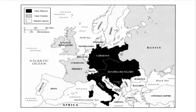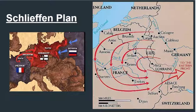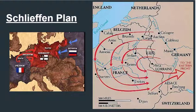Germany developed a strategy called the Schlieffen Plan, named after its designer, General Schlieffen. The plan basically called for attacking and defeating France in the west first, then rushing troops over to fight Russia in the east. The Germans felt they could carry out the plan because Russia lagged behind the rest of Europe in transportation and railroad systems, meaning it would take Russia much longer to mobilize and defend its eastern front.